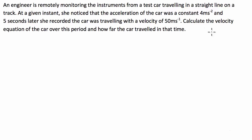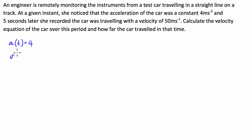So let's write down what we've got first. The acceleration was a constant 4 metres per second squared, so we know that our acceleration in terms of time is just a constant 4 metres per second squared. And 5 seconds later, she recorded the car was travelling at a velocity of 50 metres per second, so we know that the velocity at time equals 5 is equal to 50 metres per second.